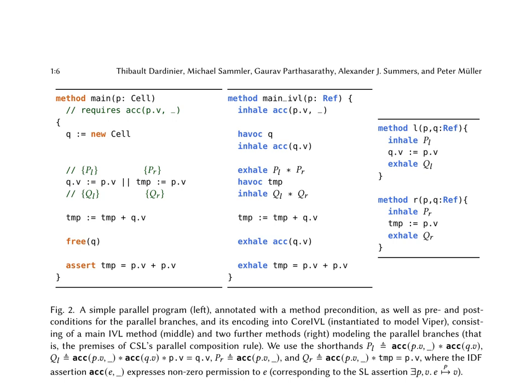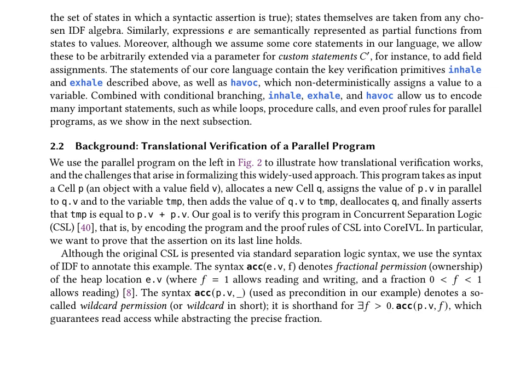This section presents a simple parallel program with annotations for method preconditions, parallel branches, and their encoding into core IVL. The program allocates a new cell, assigns the value of an input cell to the new cell and a temporary variable, adds the new cell's value to the temporary variable, deallocates the new cell, and asserts that the temporary variable equals the sum of the input cell's value and itself. The encoding into core IVL includes a main IVL method and two further methods modeling the parallel branches, using inhale and exhale statements to manage permissions and havoc to non-deterministically assign values. The goal is to verify this program in CSL by encoding it and the CSL proof rules into core IVL.